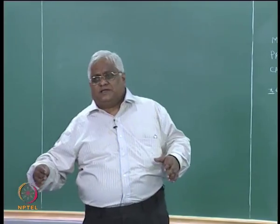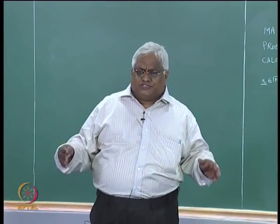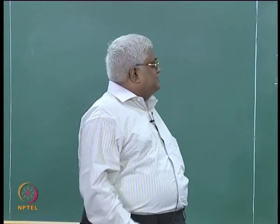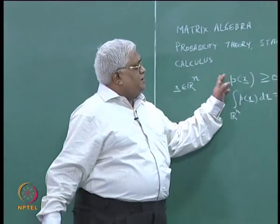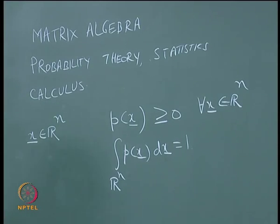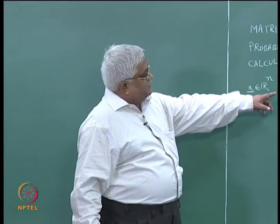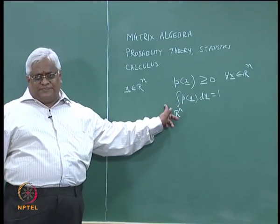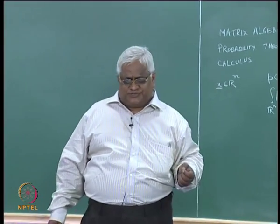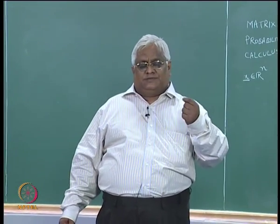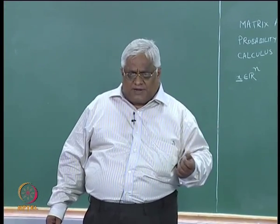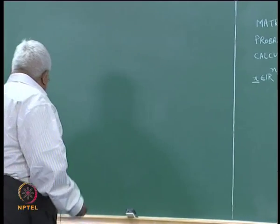In the course of these lectures, we can assume we are not going into complex spaces — basically we are going to work in real spaces. So our probability density function is like this. There are many such functions, and one such function is known as the density function for Gaussian distribution, or Gaussian density function, also known as the normal density function.